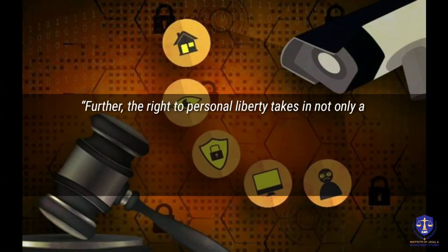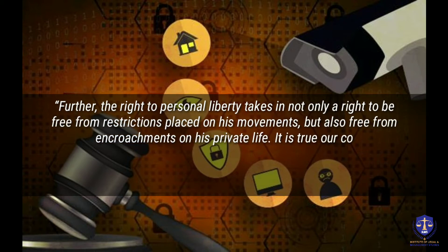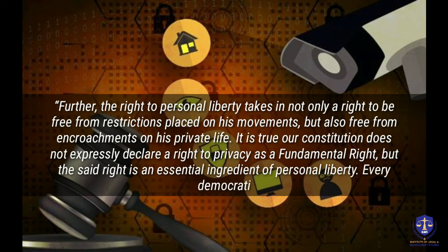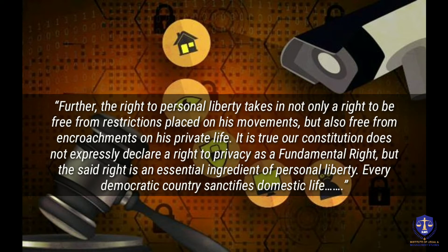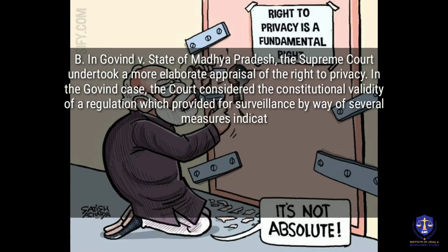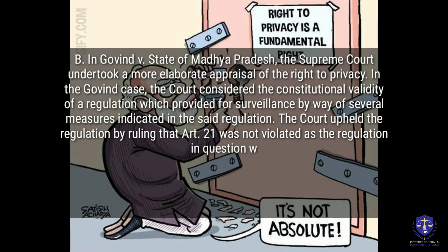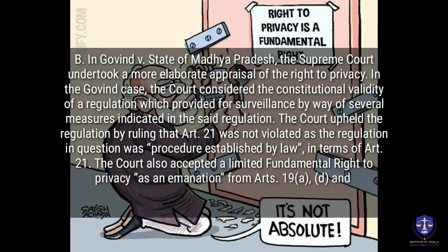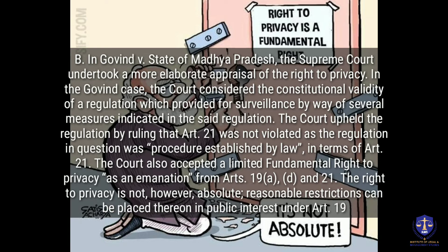In the words of Justice Subharao: 'The right to personal liberty takes in not only a right to be free from restrictions placed on his movements but also free from encroachments on his private life. It is true our Constitution does not expressly declare a right to privacy as a fundamental right, but the said right is an essential ingredient of personal liberty. Every democratic country sanctifies domestic life.' In Govind vs the State of Madhya Pradesh, the Supreme Court undertook a more elaborate appraisal of the right to privacy. The court upheld the regulation for surveillance as not violating Article 21 since it was procedure established by law, but also accepted a limited fundamental right to privacy as an emanation from Articles 19(a), (b), and Article 21. The right to privacy is not, however, absolute; reasonable restrictions can be placed thereon in public interest under Article 19(5).